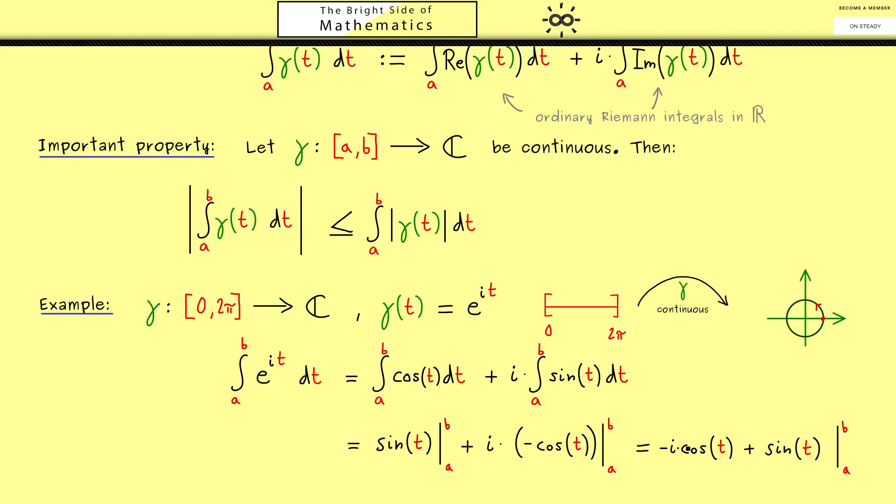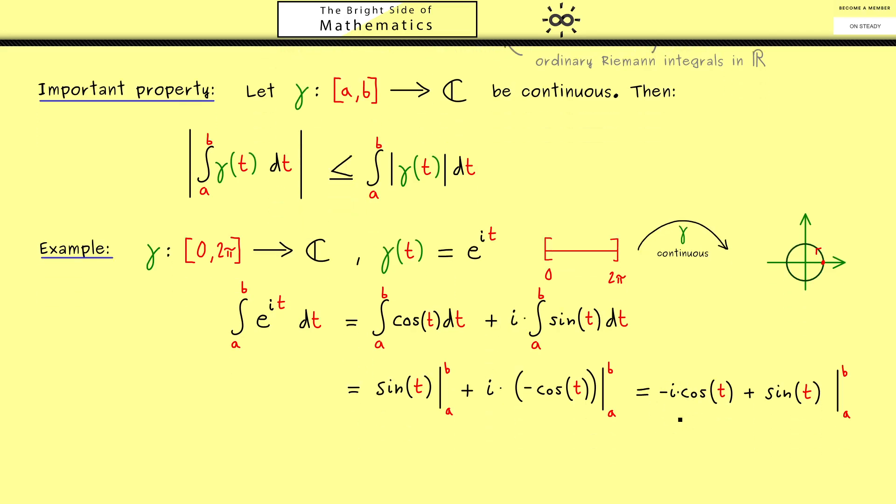Namely we could write minus i cosine in front plus sine of t. And then you should see it should be possible to factor out the minus 1 here. In other words we can write 1 divided by i times cosine of t plus i sine of t. And now when you see this you should recognize this is again our exponential function. In short it's 1 over i times the exponential function of it.